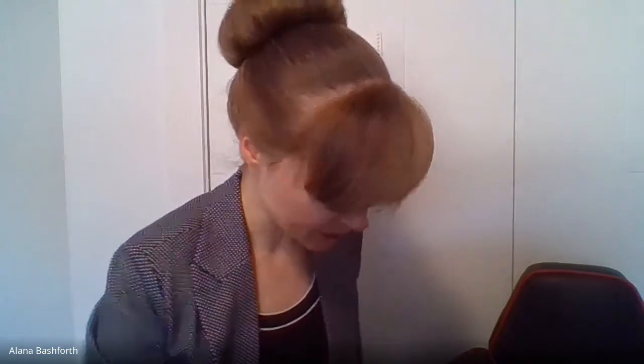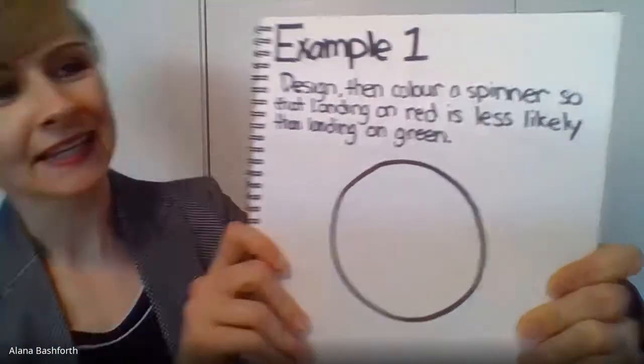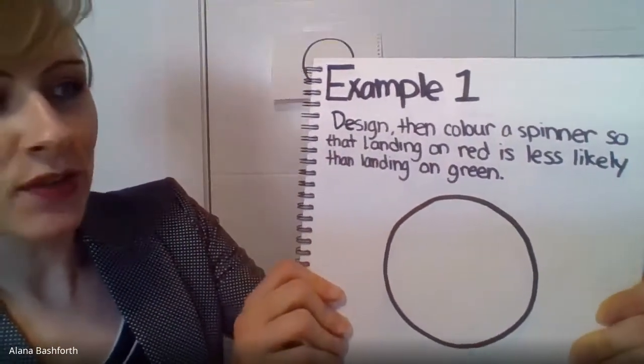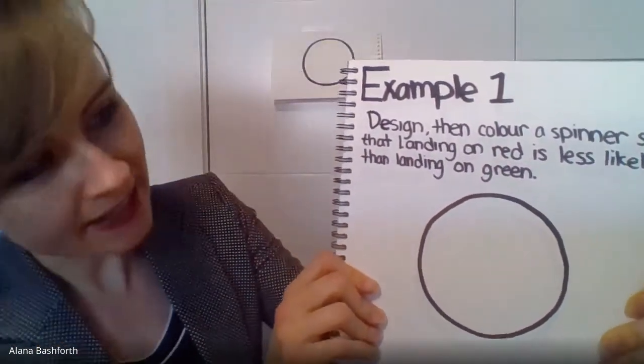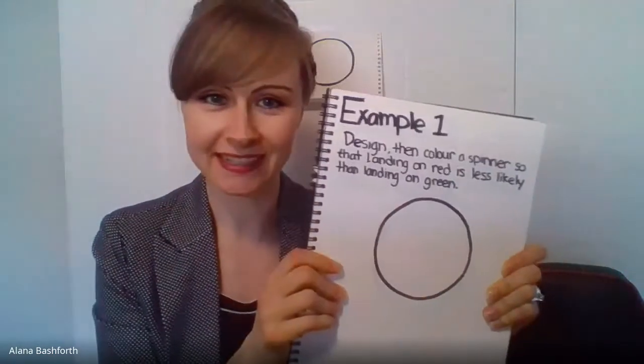Okay, so I'm going to show you how to design three spinners. I'm going to be using the colors blue, red, and green. The first example is: design and color a spinner so that landing on red is less likely than landing on green. We can include other colors in there if we want, but we definitely need to make sure that landing on red is less likely.